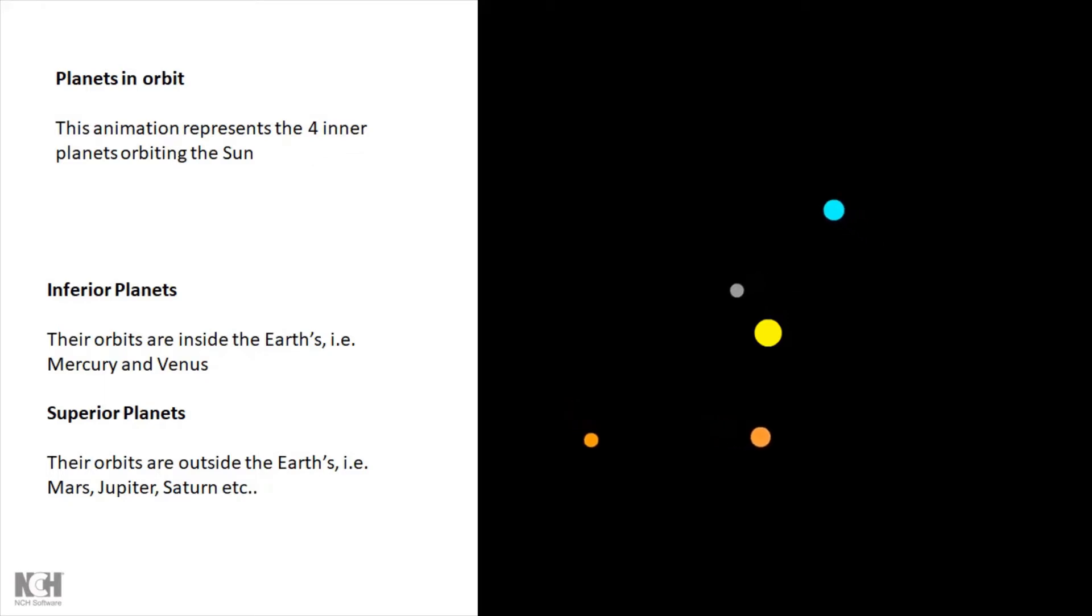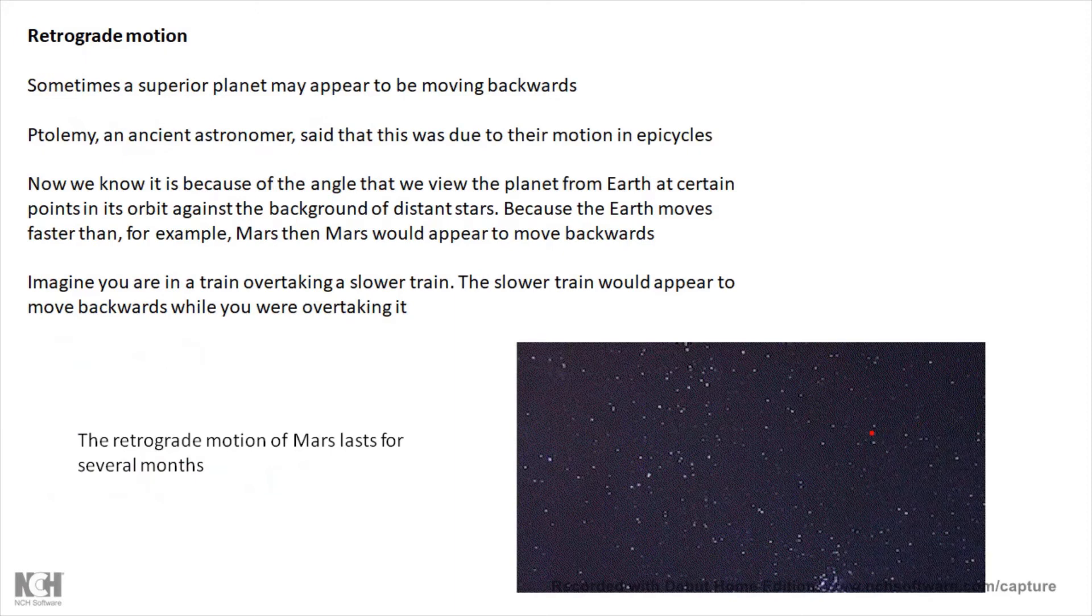There are quite a few terms that you need to understand. First of all, there are inferior planets. Mercury and Venus are inferior because they are closer to the Sun than Earth. Mars, Jupiter, Saturn, they are superior. They are further than Earth from the Sun. So the superior and inferior planets.